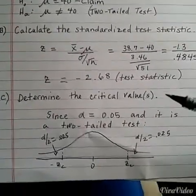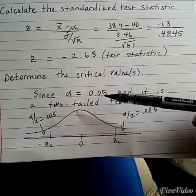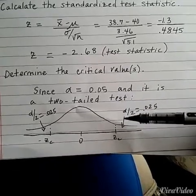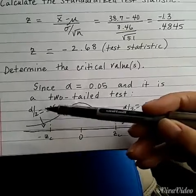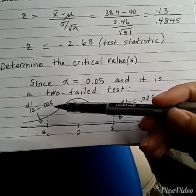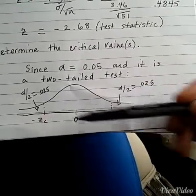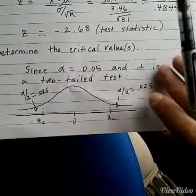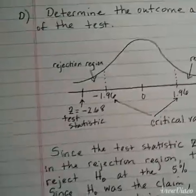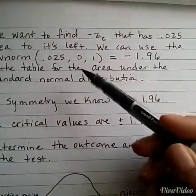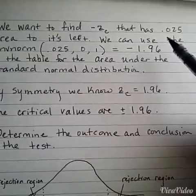Next we want to find the critical values. We look at the alpha level, the level of significance. We see that it's 0.05. Because it's a two-tailed test, we must divide the alpha level by 2, and this ends up being 0.025. So to find the critical values, we're going to have two of them, one negative and one positive. To find that, we need to find the area to the left of this critical value that has an area of 0.025.